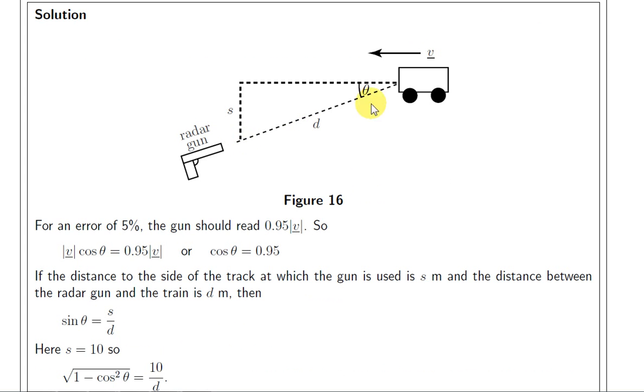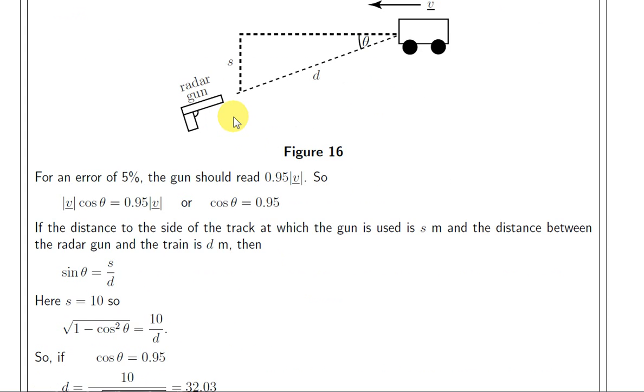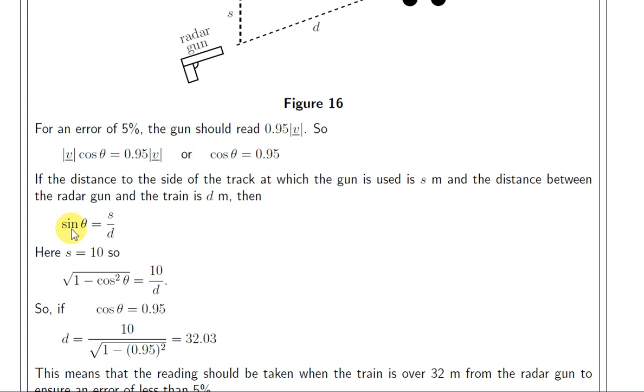So, remember, we are looking for D, the distance that she must stand from the train, so that the cos of theta is 0.95. But we are given that S is equal to 10. So, the sine of theta is 10 over D, opposite over hypotenuse.